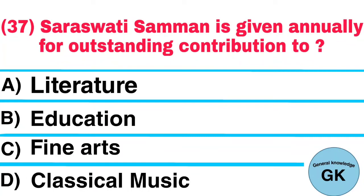Question number 37. Saraswati Samman is given annually for outstanding contribution to: A. Literature, B. Education, C. Fine arts, D. Classical music. Answer: Literature.